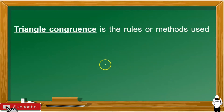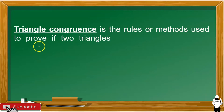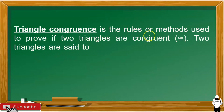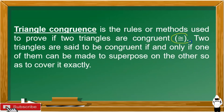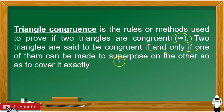What is triangle congruence? Triangle congruence is the rules or methods used to prove if two triangles are congruent. This is a symbol for congruency. Two triangles are said to be congruent if and only if one of them can be made to superpose on the other so as to cover it exactly.